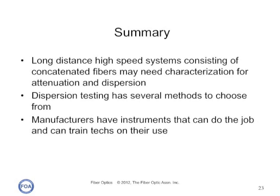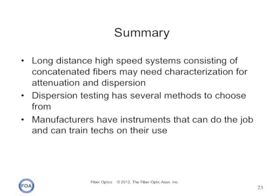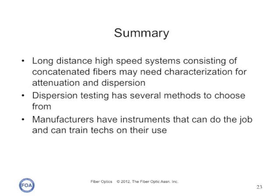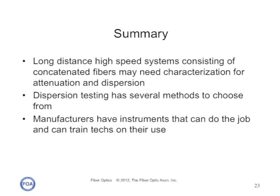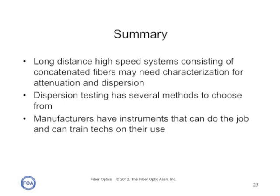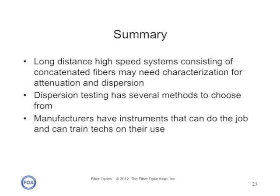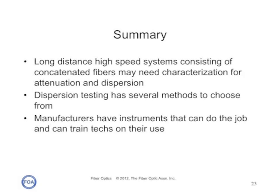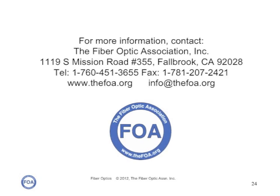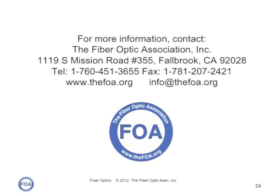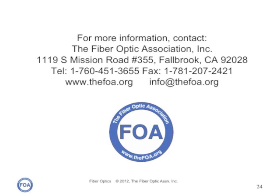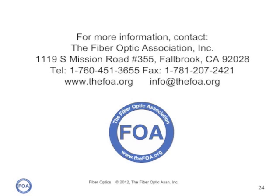In summary, long distance, high speed systems consisting of concatenated fibers may need characterization for spectral attenuation and dispersion — both chromatic dispersion and polarization mode dispersion. The dispersion testing has several different methods to choose from, but manufacturers have instruments that can do the job and can train techs on their use. As with all complex instruments, like OTDRs, proper use requires training. Be sure to look at all the other YouTube lectures on fiber optics and the hands-on hints videos on our YouTube channel. We're the Fiber Optic Association, the Professional Society of Fiber Optics.